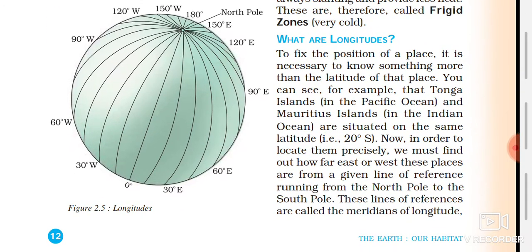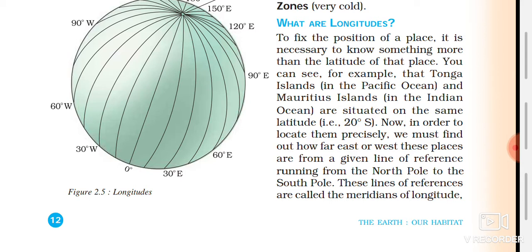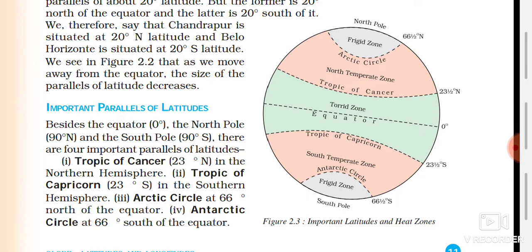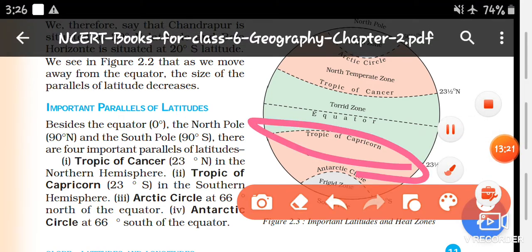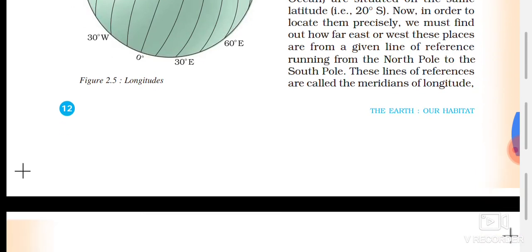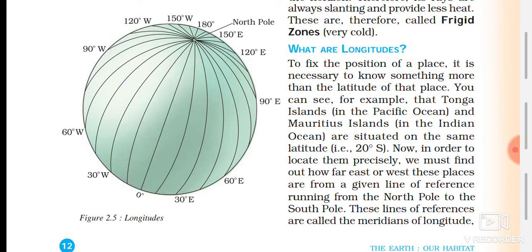We have seen the parallel horizontal lines which are parallel to the equator — those are latitudes. Now there are also longitudes. To fix the position of a place it is necessary to know something more than just the latitude, because latitude alone tells us only the north-south position, and many countries can share the same latitude.